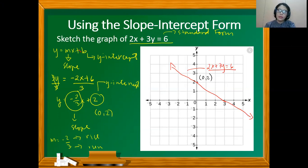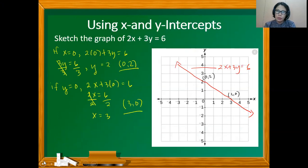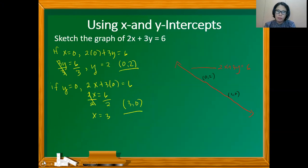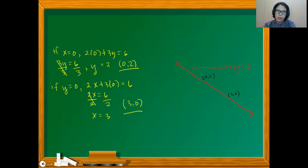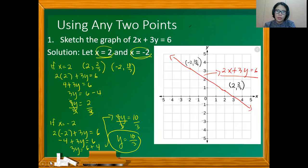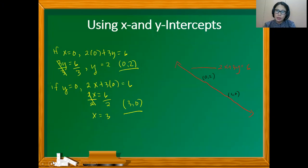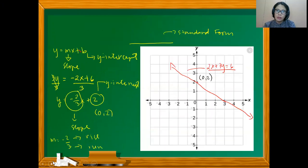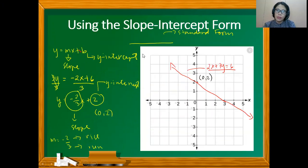Notice that using different methods, we arrive at the same graph because we're using the same linear equation. Sketching linear equations in two variables can be done using any two points, using the x and y-intercepts, or using the slope-intercept form. That's it for now, Grade 8.